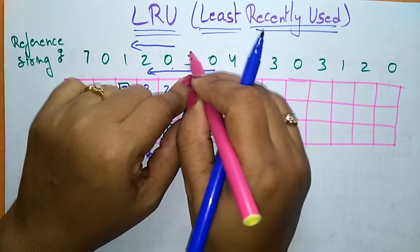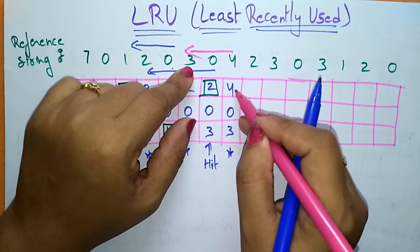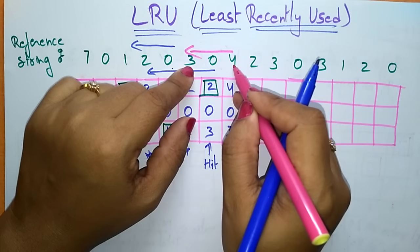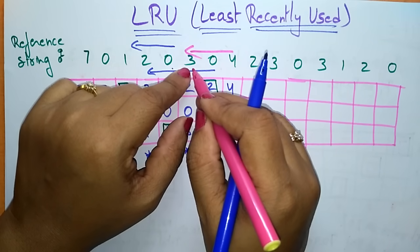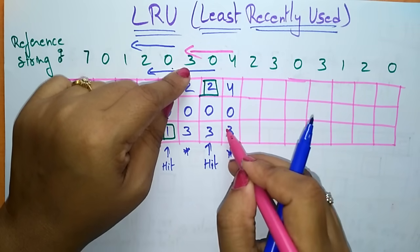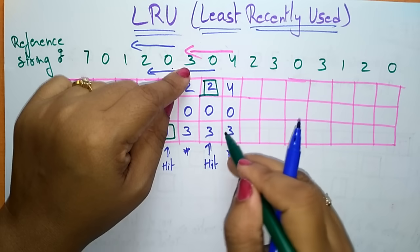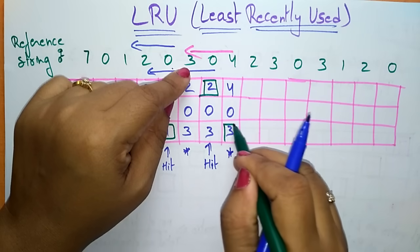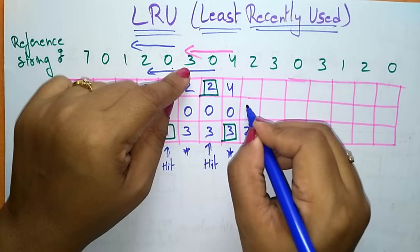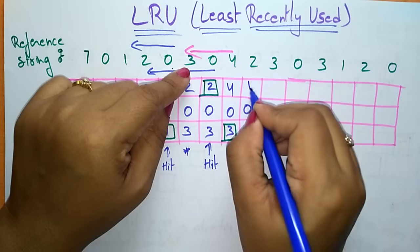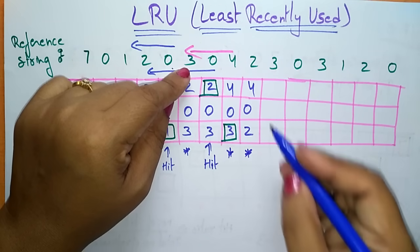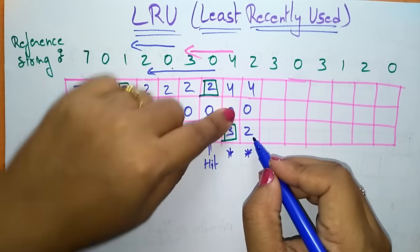Among frames 4, 0, 3: 4 is most recently used, then 0, and 3 is the least recently used. So I replace 3 with 2, giving frames: 2, 0, 4. This is also a page fault. Now I have to place 3.